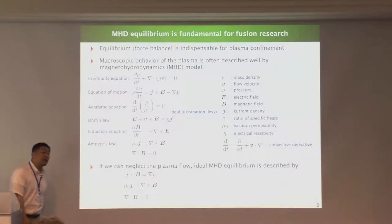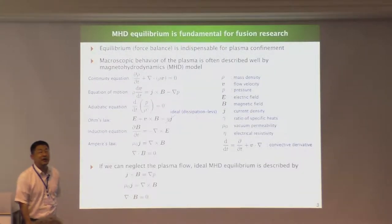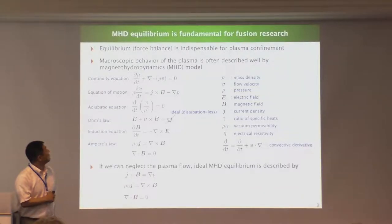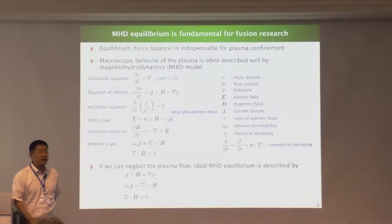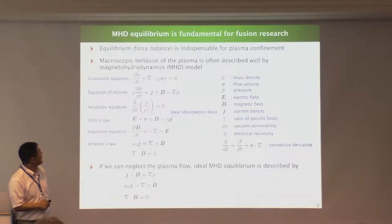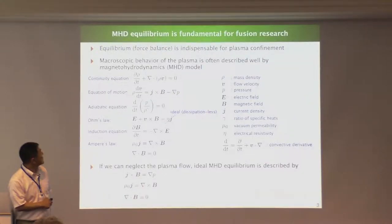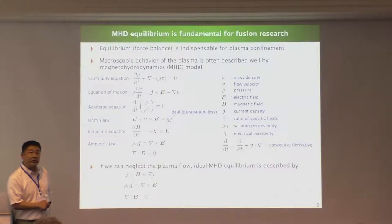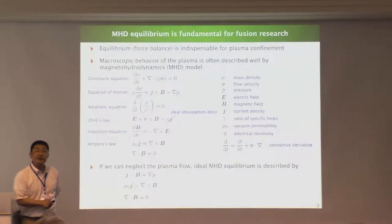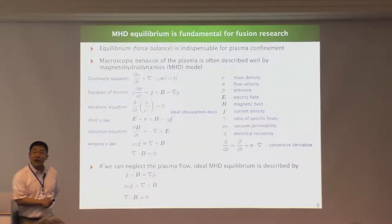This kind of macroscopic behavior of the plasma is often described by the model magnetohydrodynamics, which is called MHD. The equations include continuity, the equation of motion, the adiabatic equation, Ohm's law, and Maxwell's equations. In this presentation, we dropped the dissipation effect, which is called ideal MHD.